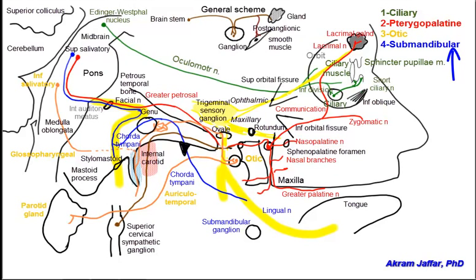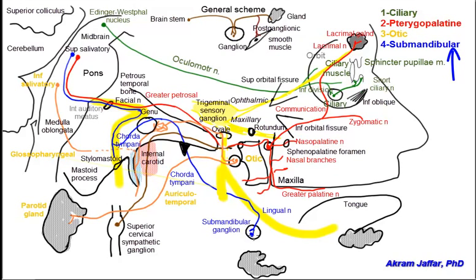The chorda tympani carries preganglionic parasympathetic fibers from the superior salivatory nucleus, and in addition, carries taste fibers to the anterior two-thirds of the tongue. The parasympathetic fibers from the chorda tympani, accompanying the lingual nerve, relay in the submandibular ganglion. Postganglionic secretomotor fibers from the submandibular ganglion accompany branches of the lingual nerve and are distributed to the sublingual and submandibular salivary glands.